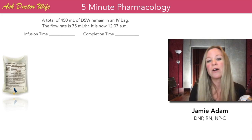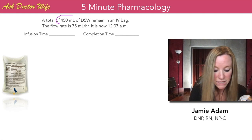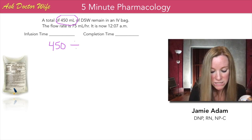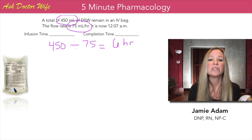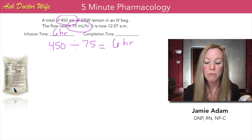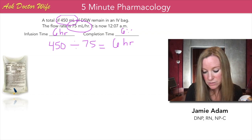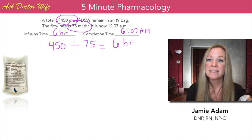Total volume divided by flow rate: our total volume is 450 milliliters, divided by our flow rate of 75 milliliters per hour, which gives us 6. So it's going to take six hours to infuse. If it takes six hours and it's now 12:07 AM, we can expect the infusion to be complete by 6:07 AM — we simply took 12:07 and added six hours.